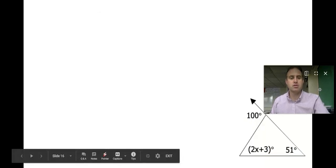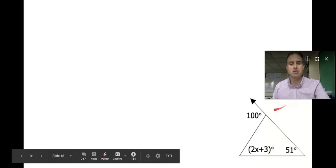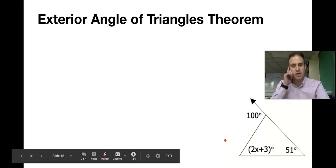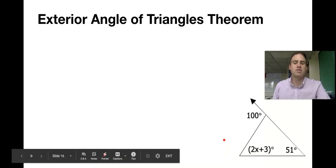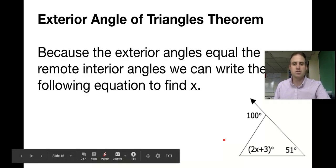Now we have another triangle with some algebra. We've got an x involved here, an unknown variable. We're going to use the exterior angle theorem to figure out the value of x. We can use this to write an equation.